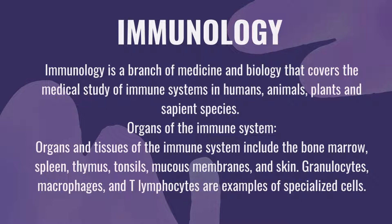Do you know what are the seven organs of the immune system? Organs and tissues of the immune system include the bone marrow, spleen, thymus, tonsils, mucous membranes, and skin. Granulocytes, macrophages, and T-lymphocytes are examples of specialized cells.